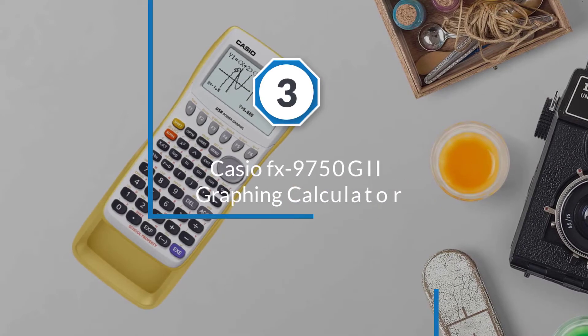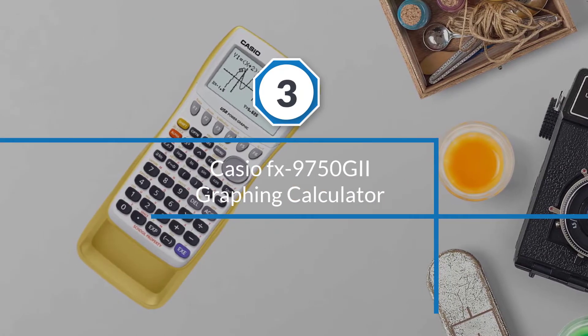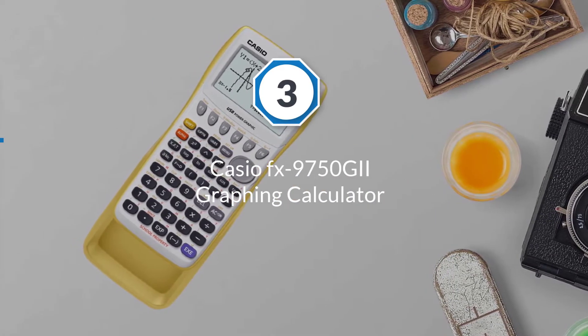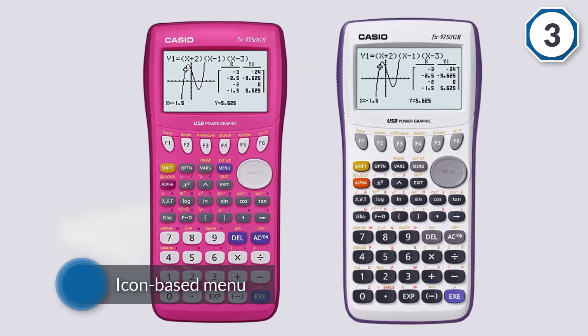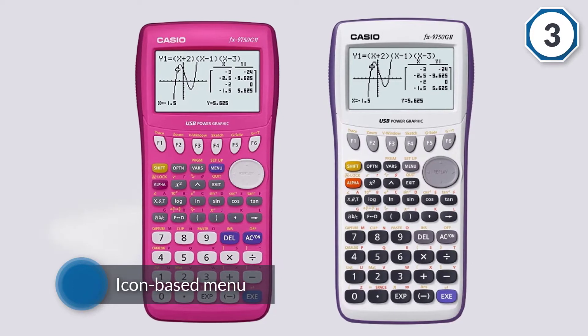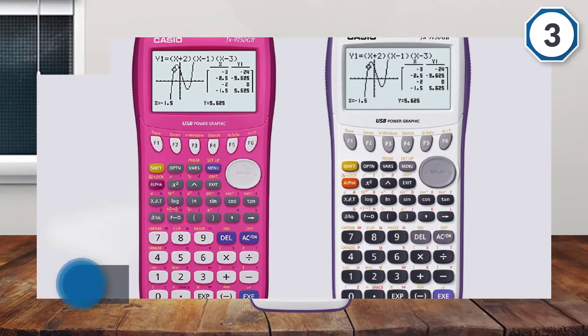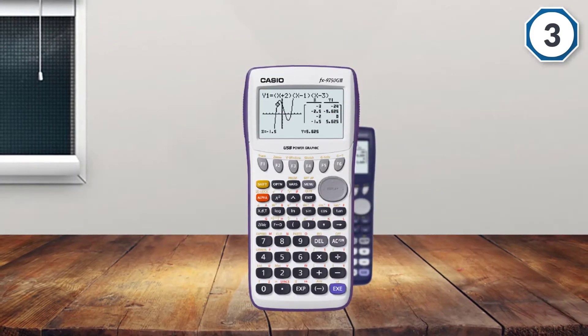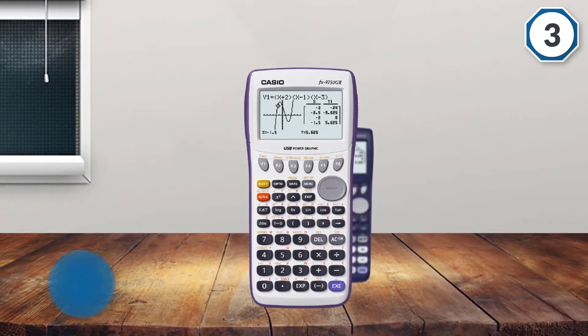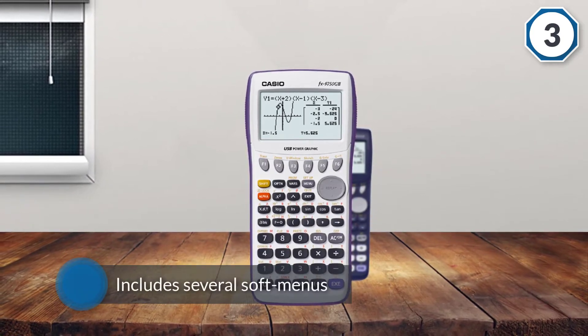Number three: Casio FX-9750GII Graphing Calculator. This unit is equipped with all the functionalities that are required for an entry-level graphing calculator. The icon-based menu makes it easy for students to navigate.